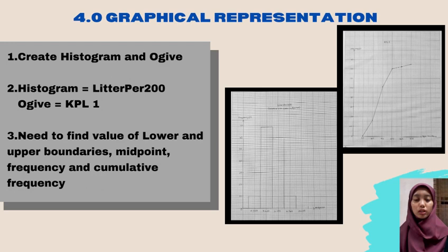In comparison, liter per 200 expectedly shows that cars of various brands are less used for travel anymore. And for KPL 1, about 140 km per liter travel distance has been passed by various types of car brands.